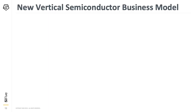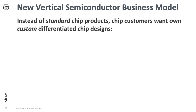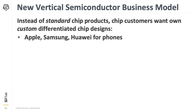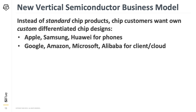In all of our discussions, we kept coming back to the same point: we saw this big sea change in the semiconductor industry — the emergence of a vertical semiconductor business model. Large chip customers, instead of being happy with standard products, really wanted their own custom differentiated chip designs. Examples of this are how Apple, Samsung, and Huawei's HiSilicon build their own silicon for phones — they don't sell the chips, they sell the phones. Or the hyperscalers — Google, Amazon, Microsoft, Alibaba — building chips to put in their cloud services, selling the service that the chips enable.